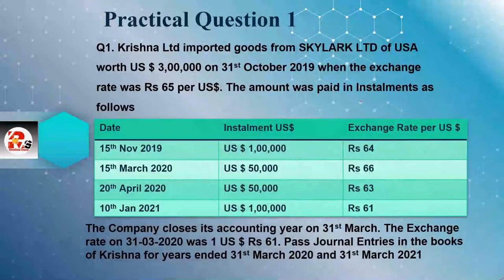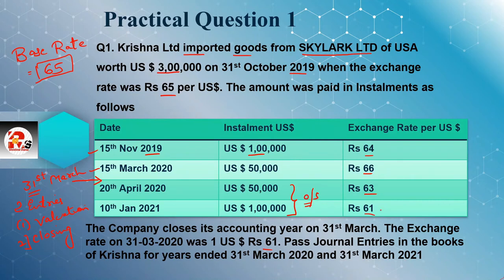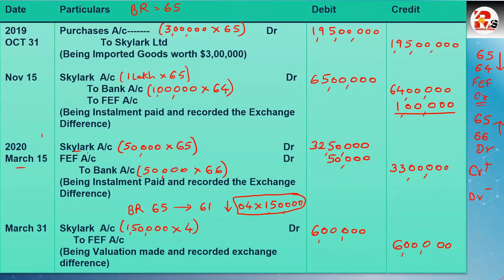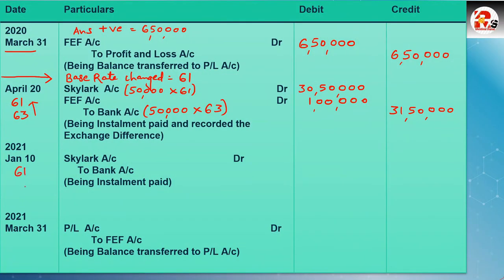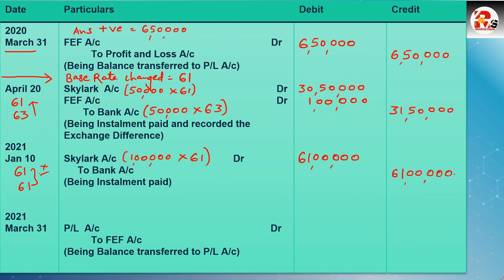Next installment — 10th January 2021, $1,00,000, rate 61. Base rate is also 61 — same rate, so no difference. No FEF appears in this entry. Entry: Skylar Account Debit to Bank. $1,00,000 × 61 = ₹61 lakhs. Narration: Being installment paid. Now we've passed entries from 31st March onwards — one for April and one for January. The closing for 31st March 2021 must also be done.